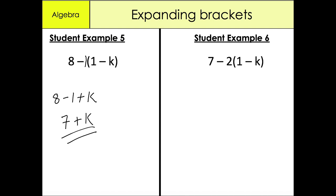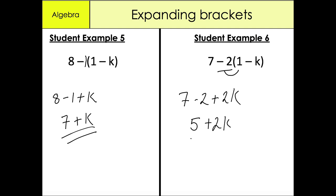The final example is 7 - 2(1 - k). I expand the brackets: minus 2 times 1 is minus 2, minus 2 times minus k gives positive 2k. Simplifying: 7 minus 2 is 5, so our final answer is 5 + 2k.